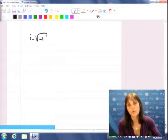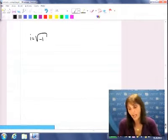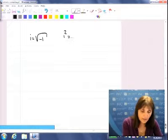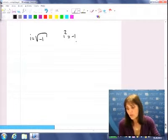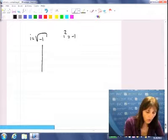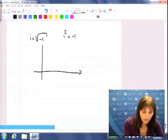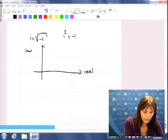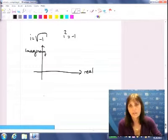Up until intermediate algebra, we were saying no real answer, but now we are giving an answer, and i squared is simply negative 1. This is all abstract, so let's think of a plane where you have a real axis and you have an imaginary axis, and i is an imaginary number.